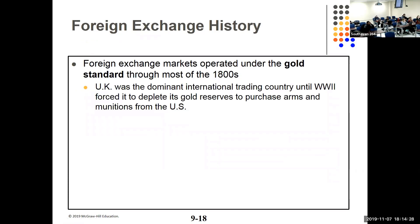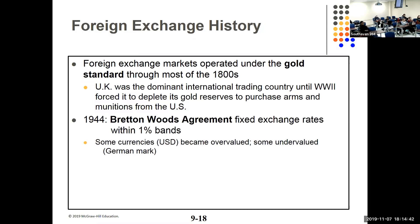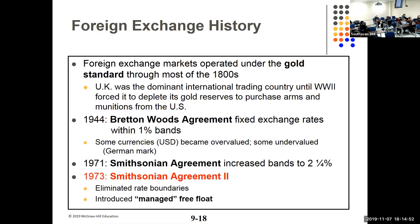Foreign exchange markets operated under the gold standard during most of the 1800s, with the UK as the dominant center and the gold price fixed in London. The Bretton Woods Agreement of 1944 fixed exchange rates in a 1% band, which ended up with some currencies overvalued and some undervalued. The Smithsonian Agreements of 1971 and 1973 moved us to a managed float — exchange rates are allowed to free float, but central banks can step in and buy or sell to try to influence direction, similar to how the Federal Open Market Committee operates.